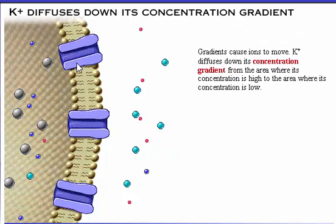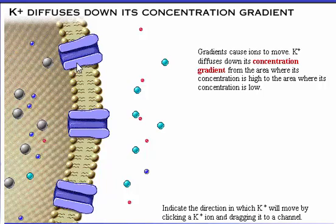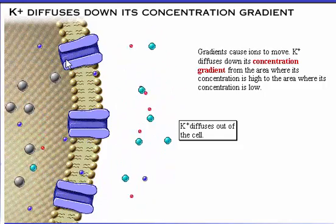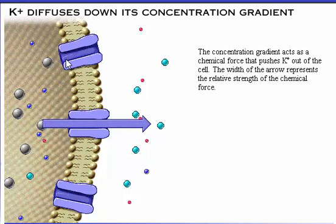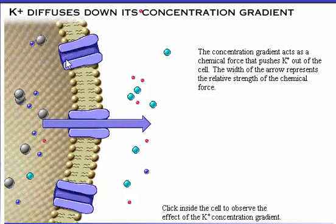Gradients cause ions to move. Potassium will diffuse down its concentration gradient — that is, from the area where its concentration is high to the area where its concentration is low. Indicate the direction in which potassium will move by clicking a potassium ion and dragging it to a channel. Correct: potassium diffuses out of the cell. The concentration gradient acts as a chemical force that pushes potassium out of the cell.